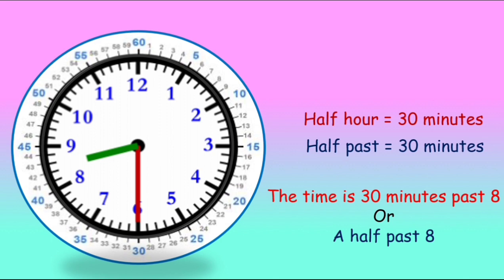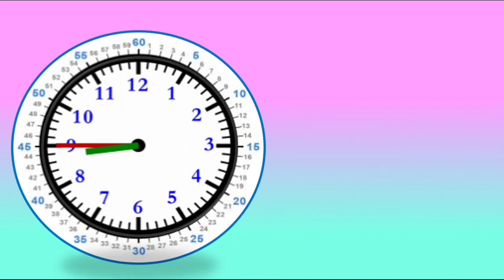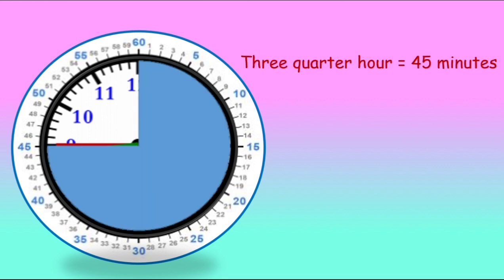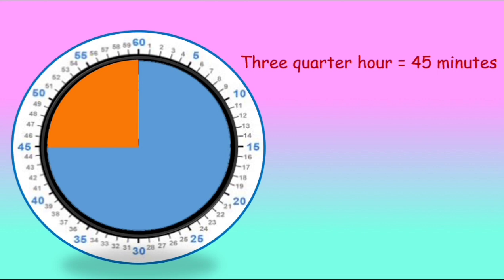The time is 30 minutes past 8 or half past 8. The minute hand has now reached the number 9, which means it has completed three-quarter of the clock — that is 45 minutes. The minute hand still has to cover another quarter of the clock to complete the hour.